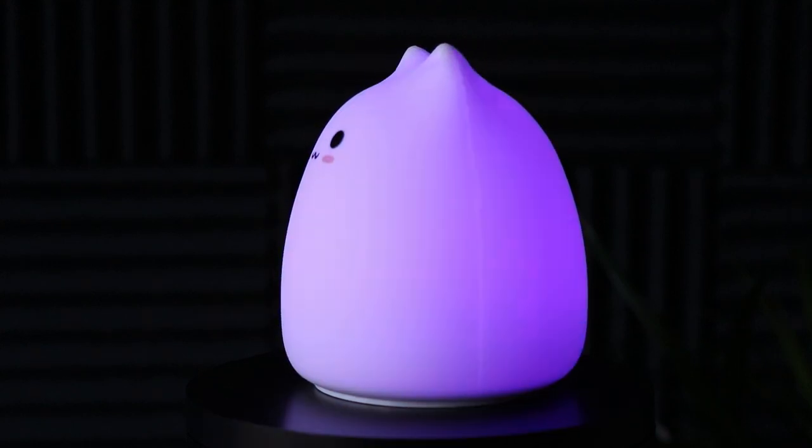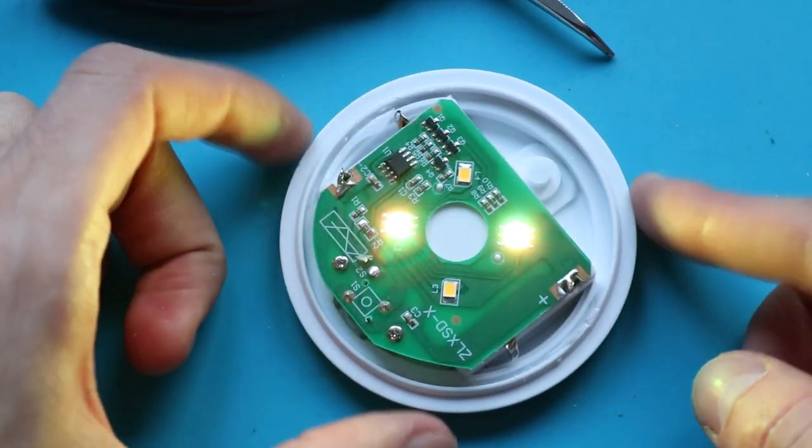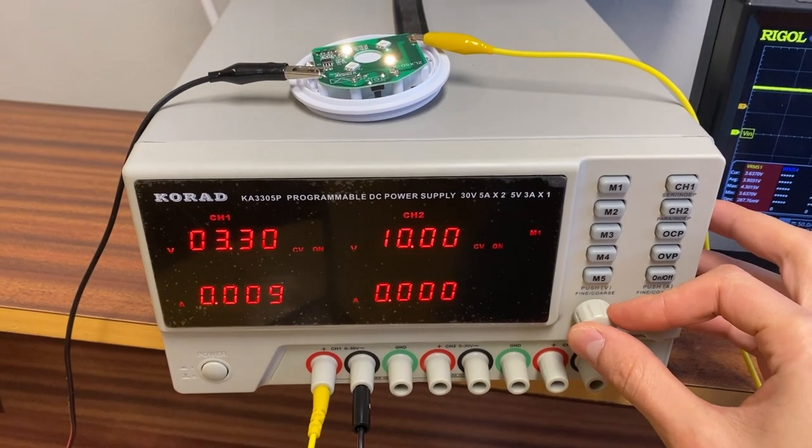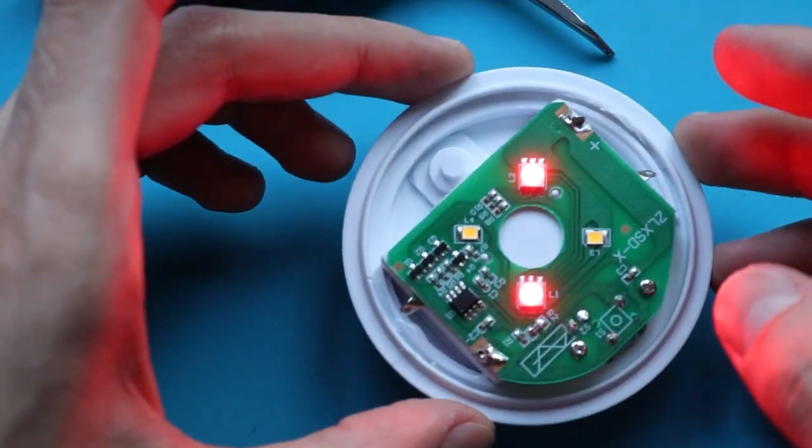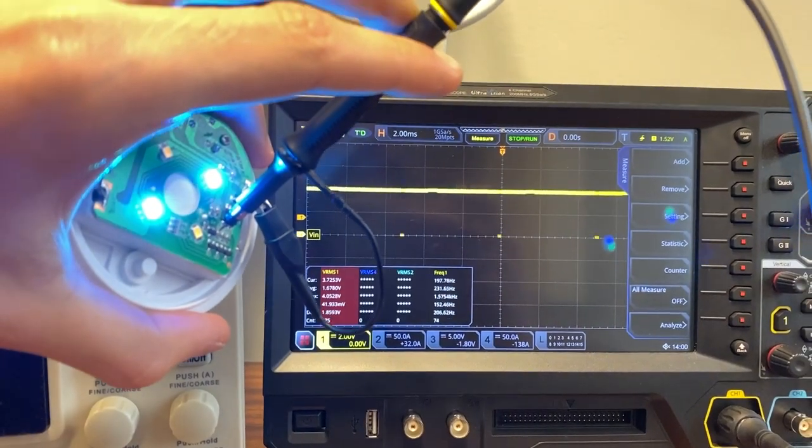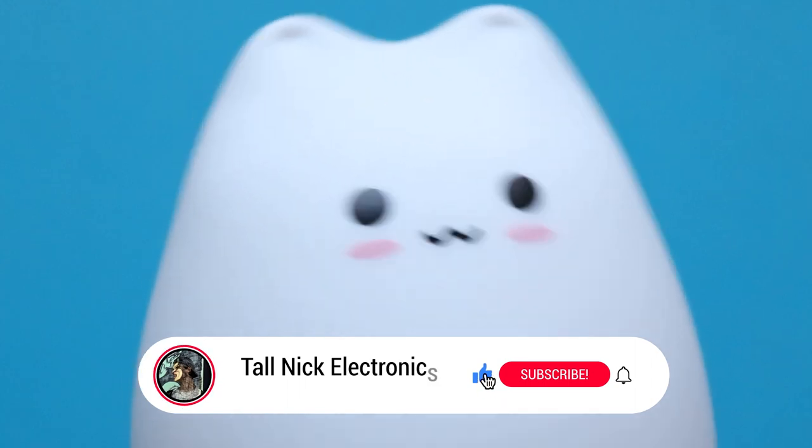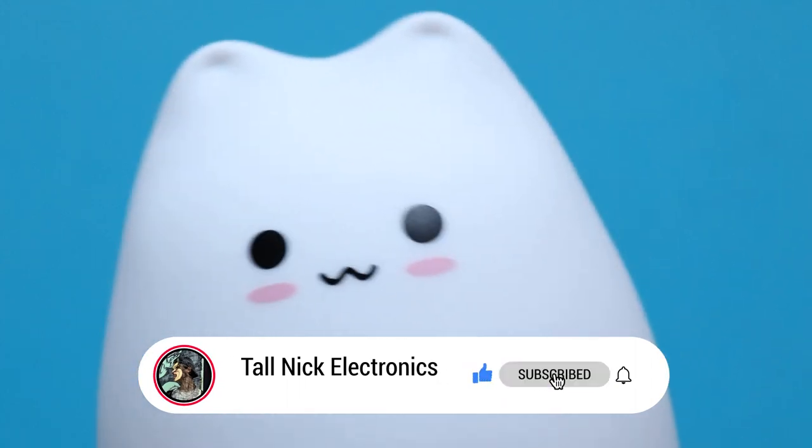In this video I will show you what is inside an RGB table lamp, in particular what interesting component I found inside, how the PCB works and how LEDs are controlled, of course with examples and schematic diagrams. But before we start don't forget to press subscribe button to see more educational and entertaining videos like that.